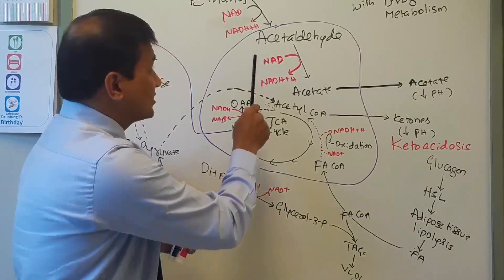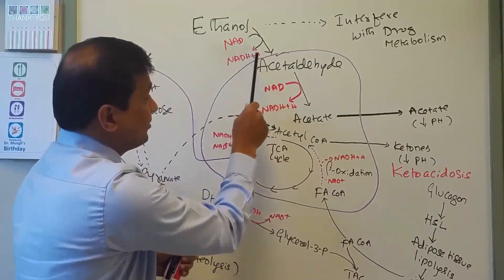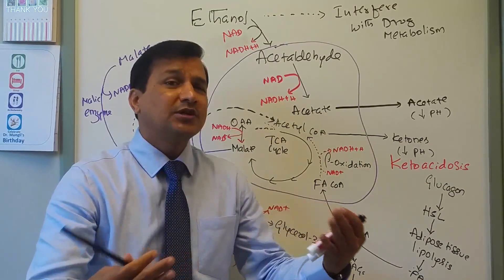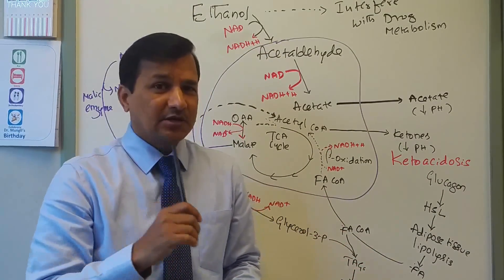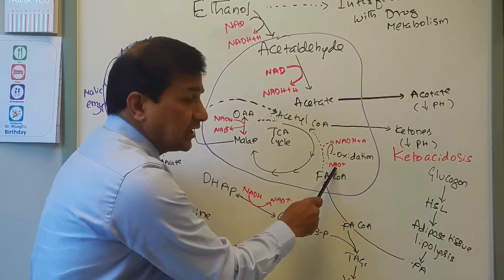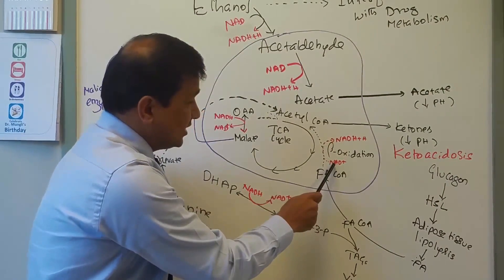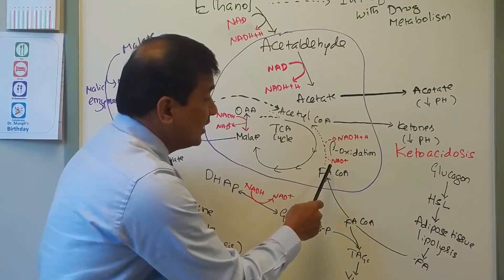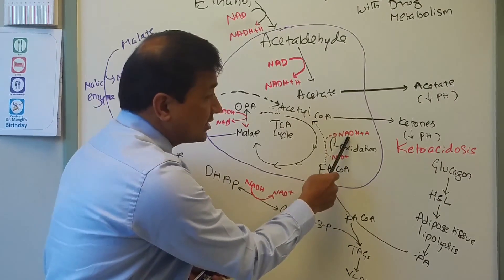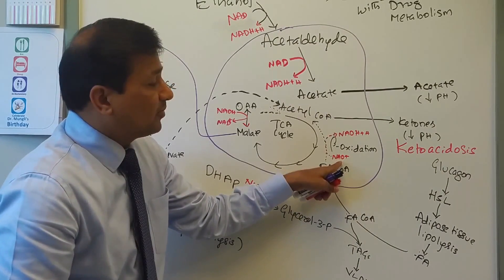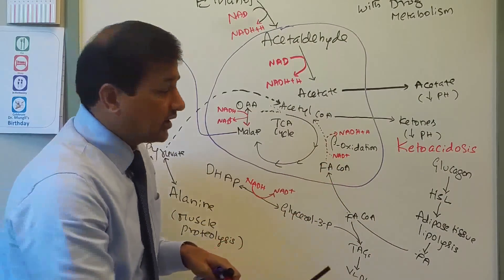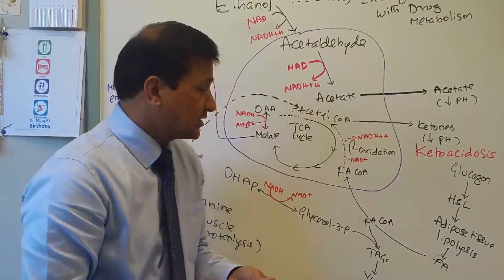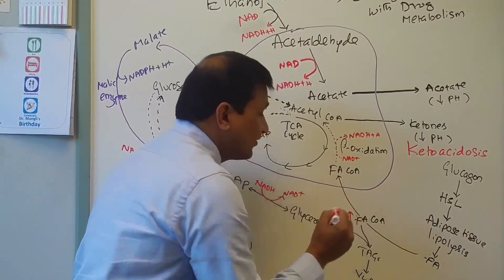However, beta-oxidation is also affected in alcoholics because alcohol metabolism has consumed NAD+ both in the cytoplasm and in the mitochondria and produced too much NADH. The beta-hydroxyacyl-CoA dehydrogenase enzyme in beta-oxidation needs NAD+, but there is simply not enough NAD+ left. Therefore, fatty acyl-CoA does not fully undergo beta-oxidation and fatty acyl-CoA levels rise in the cytoplasm.